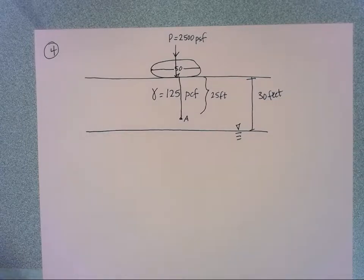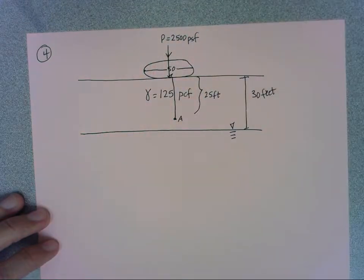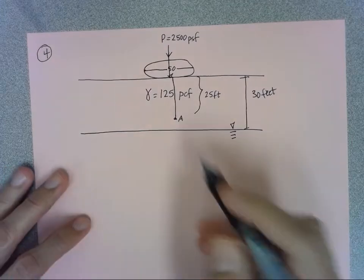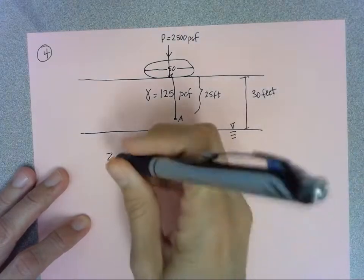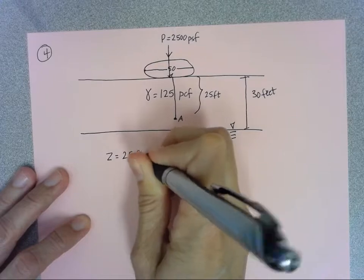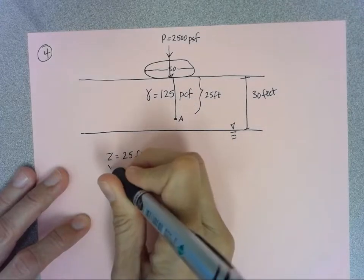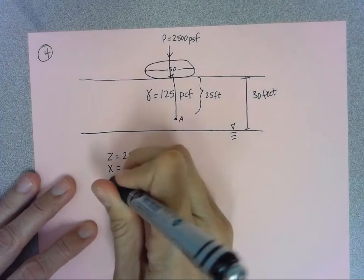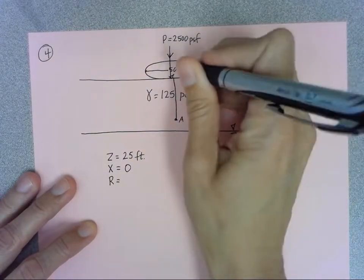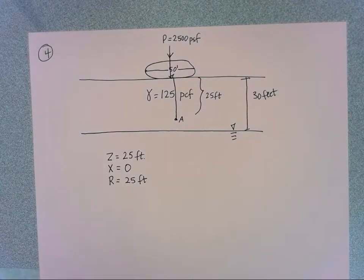We're going to have to look at some information from the Boussinesq equation and use this chart that you have your handout from. We need to know our depth of interest which we call Z, and in this case we're looking at a 25 foot depth. We also need to know how far from the center line we're interested in. We're right at the center line so our X is zero. And we need to know our radius of our tank. The diameter was 50 feet so the radius is 25 feet and our gamma is 125 feet.